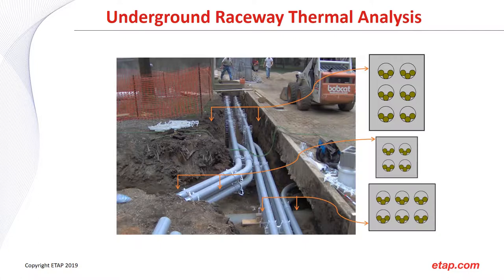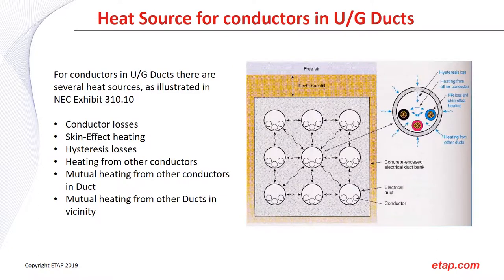Let's talk about underground raceway thermal analysis. A typical installation might be a 3×2 configuration — rows by columns. In any given installation you may have different configurations, either direct buried or in raceways. It's important to take into account the different cross sections to arrive at the most conservative calculation when doing sizing. For conductors in underground ducts, there are several heat sources.